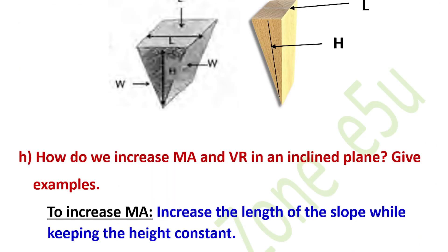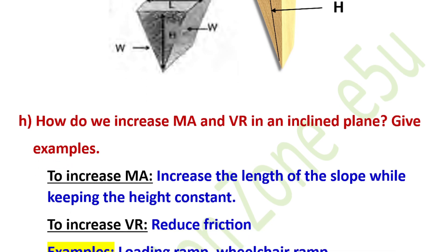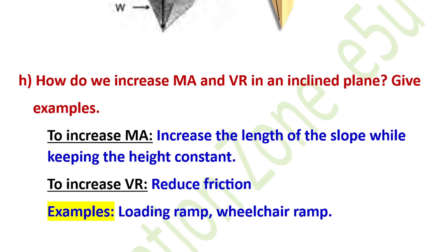How do we increase the mechanical advantage of the inclined plane? To increase mechanical advantage, increase the length of the slope while keeping the height constant. When the length is greater than the height, mechanical advantage increases. Examples: loading ramps and wheelchair ramps have longer slopes to reduce the effort needed.